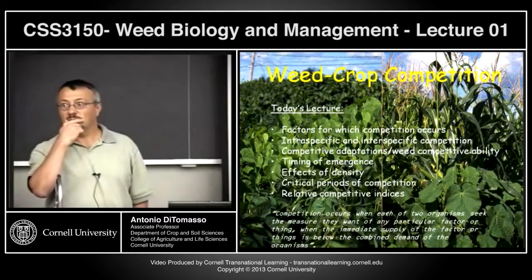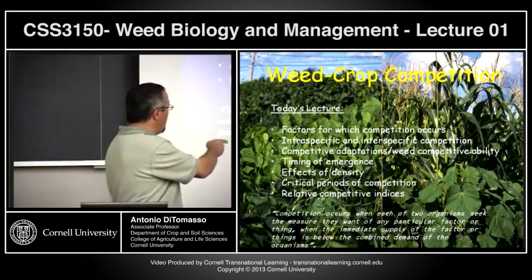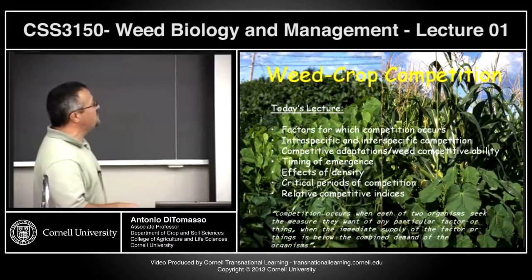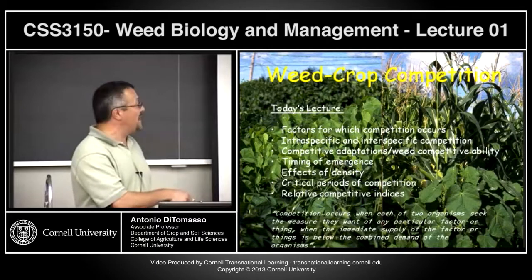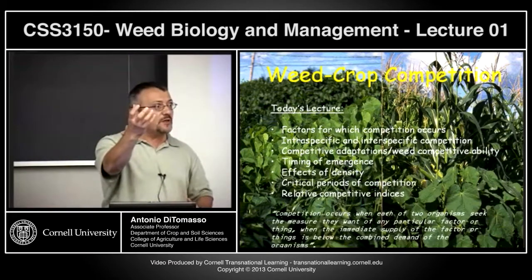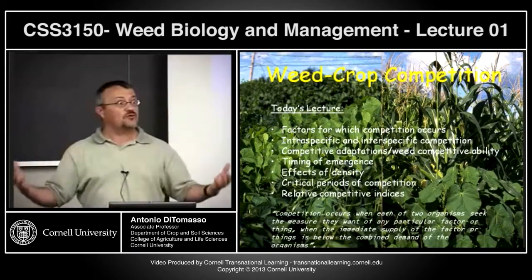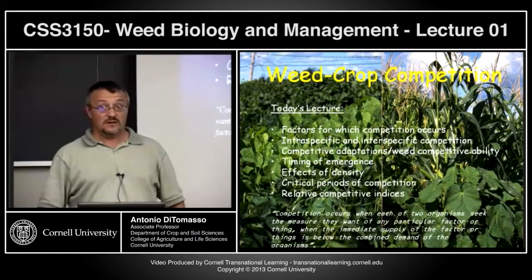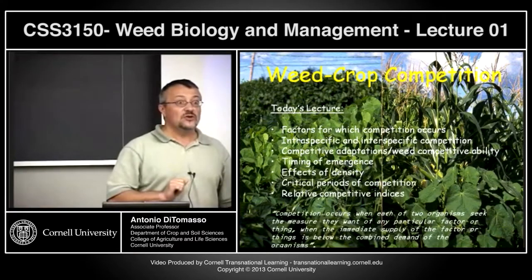Competition occurs when the amount of a resource is not enough to accommodate both plants. As Donald — a well-known agronomist — put it: competition occurs when each of two organisms seeks the same particular factor and the immediate supply of that factor is below the combined demand. Simply put: when two species are competing for a resource in short supply, you get competition. Look at what's happening with oil right now — demand greater than supply, prices spike.